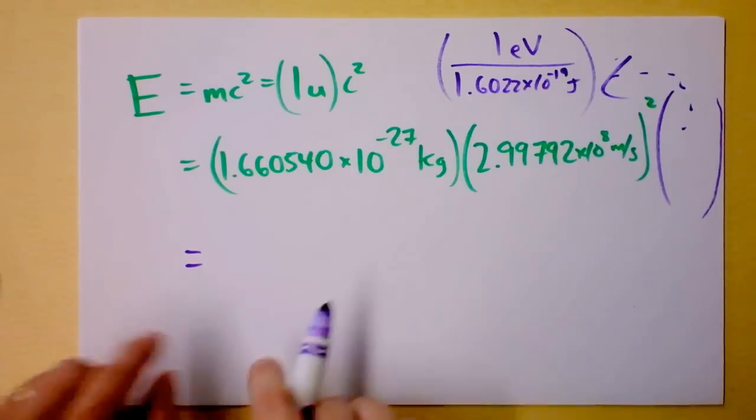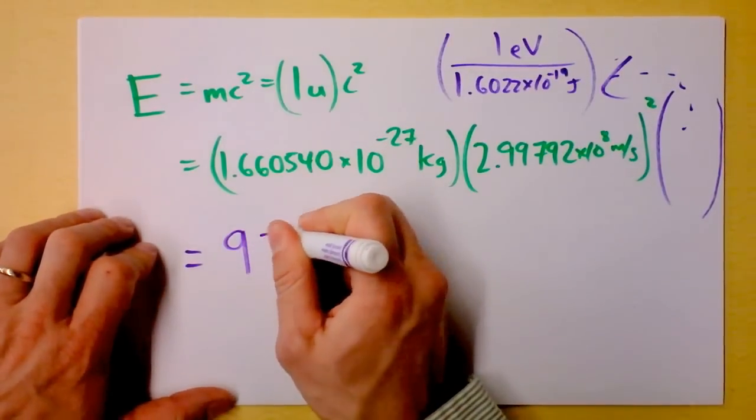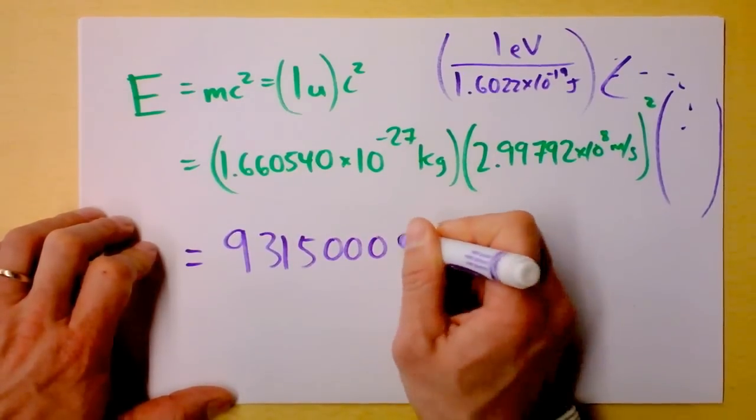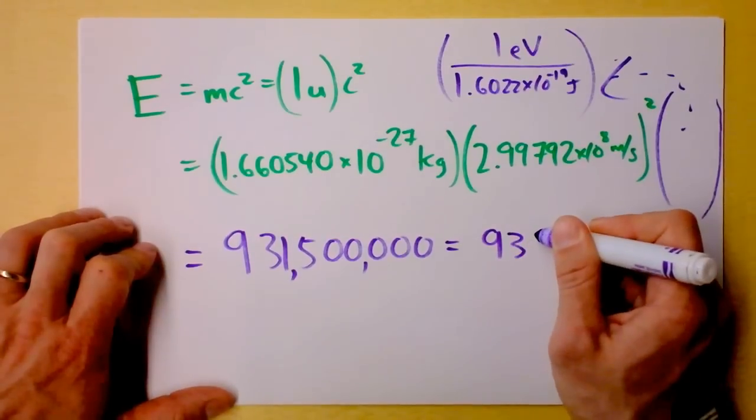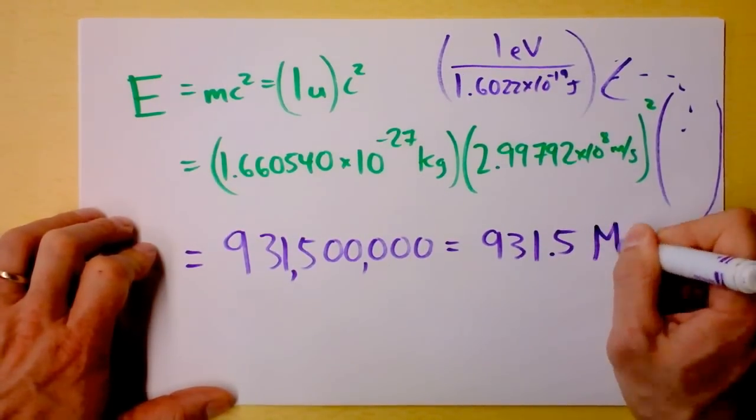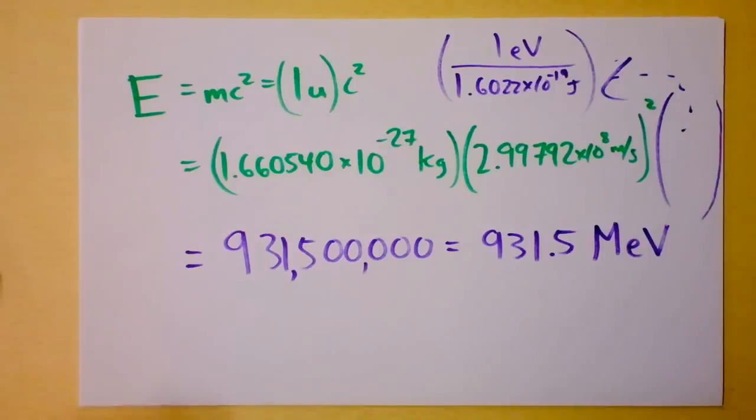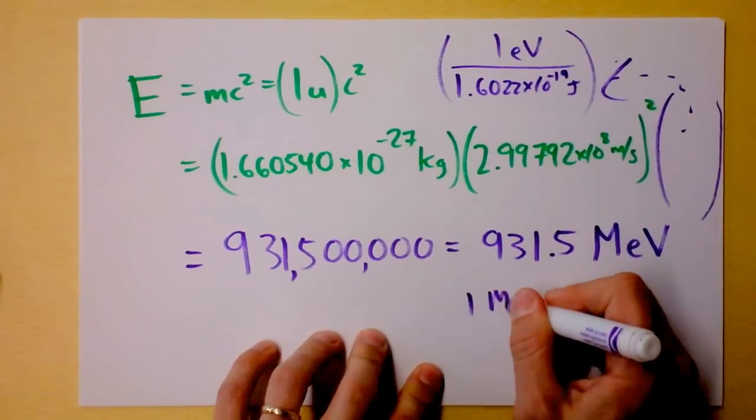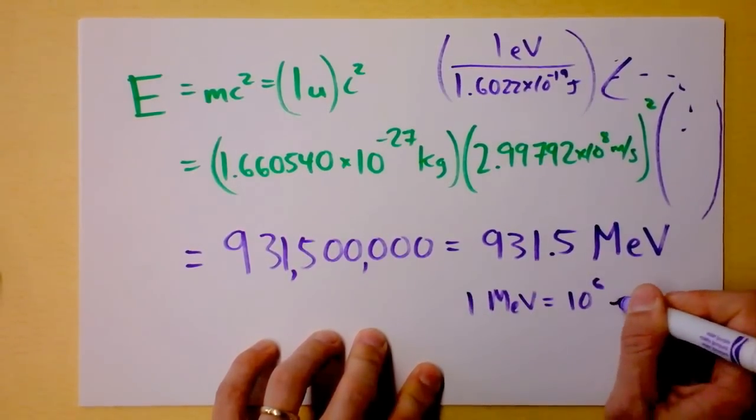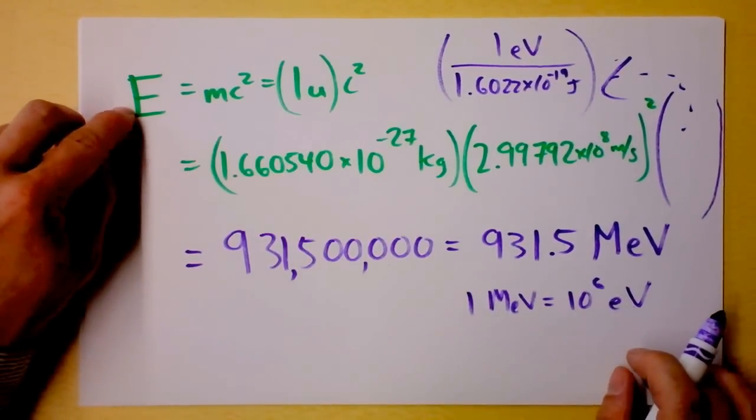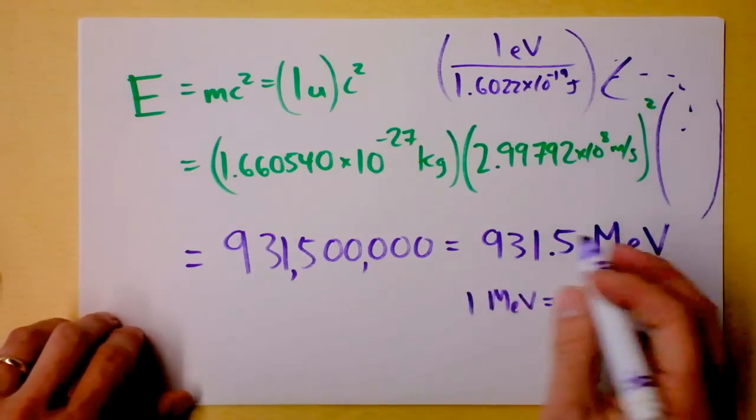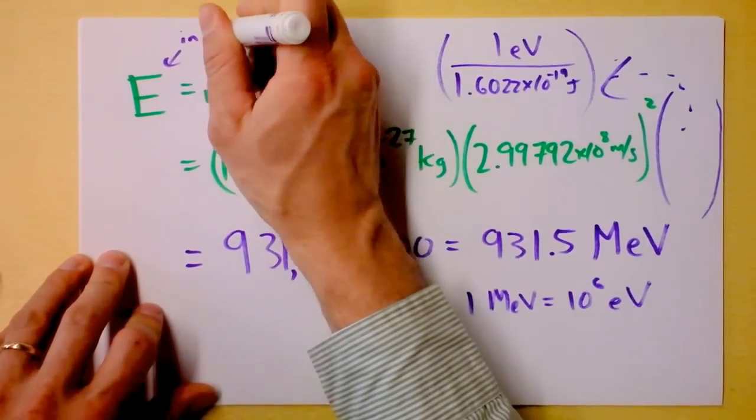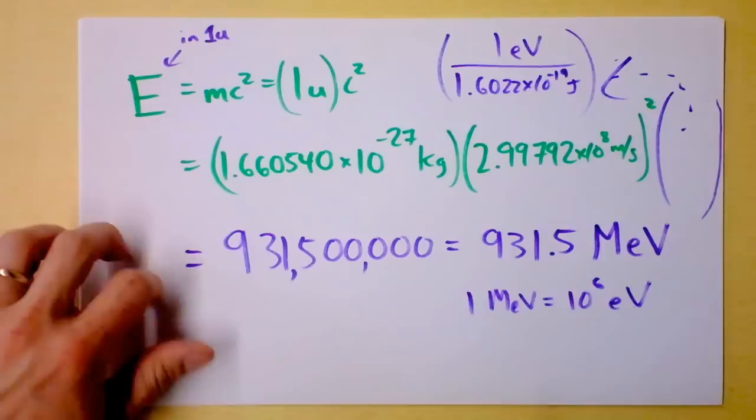Now I'm going to get a number in electron volts. Type, type, type, pretend type. 9-3-1-5-0-0-0-0-0-0, oh my goodness. That's 931.5 mega electron volts, or million electron volts, or as we say in the business, MEV. Yeah, that's what we're going to call it, because of course, 1 MEV is 10 to the 6th EVs. Cool. So this is the energy contained in one proton, give or take. It might be slightly more, it might be slightly less, but I'm saying it's the energy in one atomic mass unit. Now that's cool.